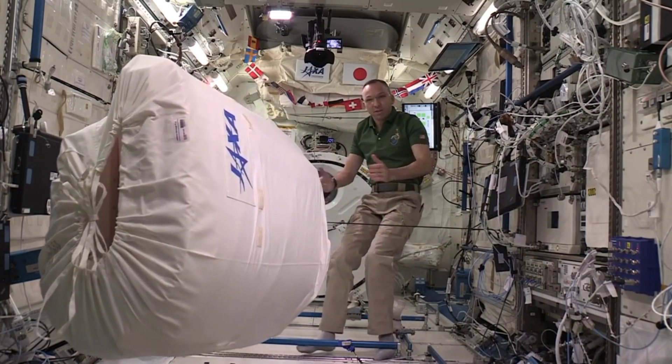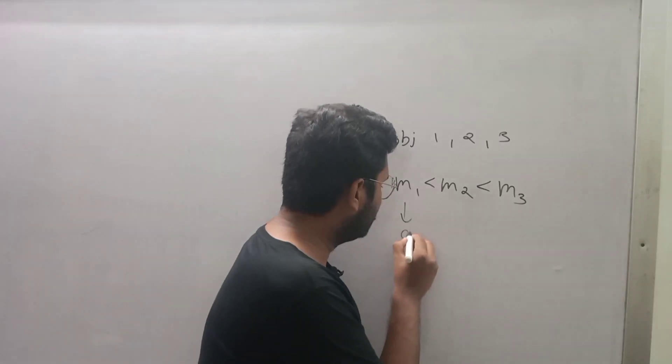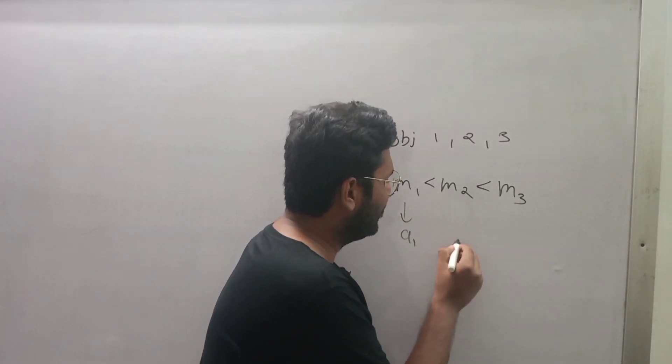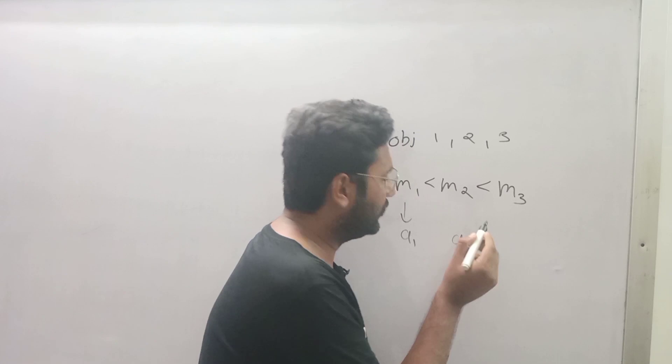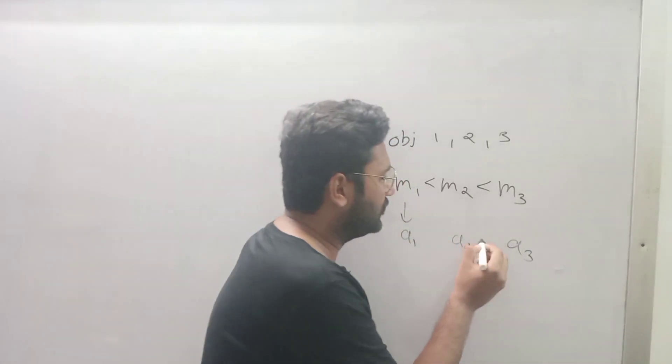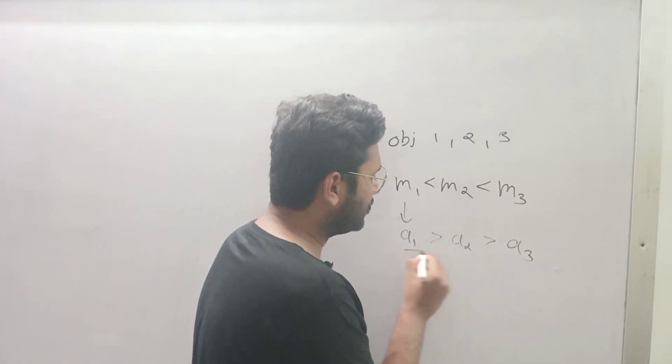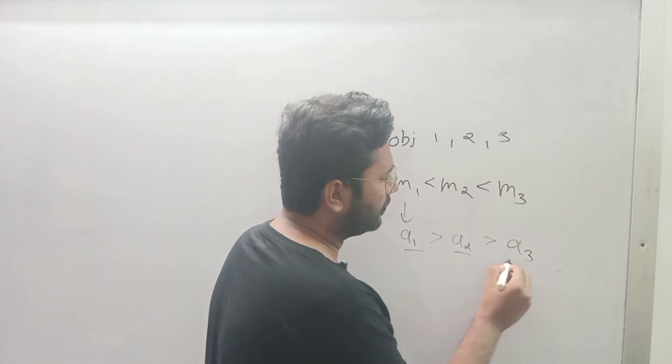There you have it. Now as you saw in the video, this object m1 has highest acceleration, m2 has middle one, and m3 has smallest acceleration in entire experiment. So a1 will be greater than a2, and a2 will be greater than a3.